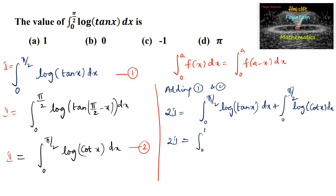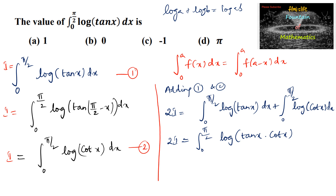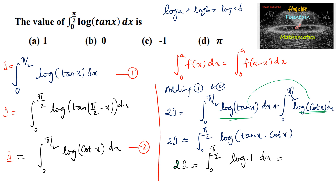Adding equation 1 and equation 2, we get 2I equals integral from 0 to π/2 of [log(tan x) plus log(cot x)] dx. Since both integrals have the same limits 0 to π/2, we can combine them. Using log a plus log b equals log(ab), we get log(tan x times cot x). Since tan x times cot x equals 1, we get 2I equals integral from 0 to π/2 of log 1 dx. Since log 1 equals 0, we get 2I equals 0, so I equals 0.